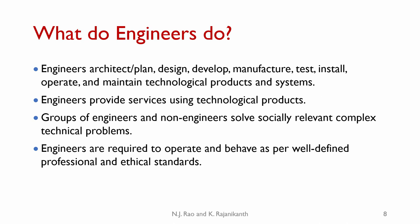What do engineers do? Engineers architect, plan, design, develop, manufacture, test, install, operate, and maintain technological products and systems. They are unlikely to do all of them at the same time, but at different points of their career they will be involved in two or more such activities. Engineers also provide services using technological products, and some groups of engineers and non-engineers work together to solve socially relevant complex technical problems — such as traffic, water, climate change, or disaster response.